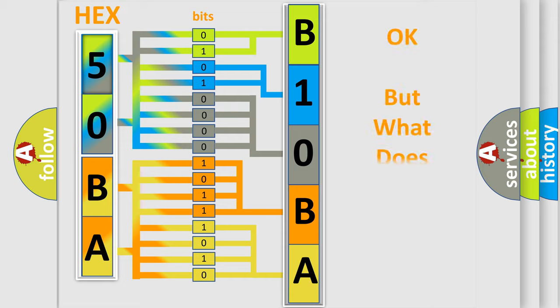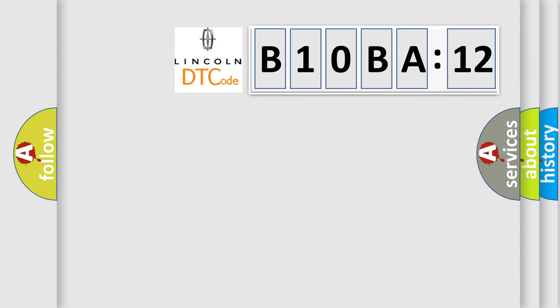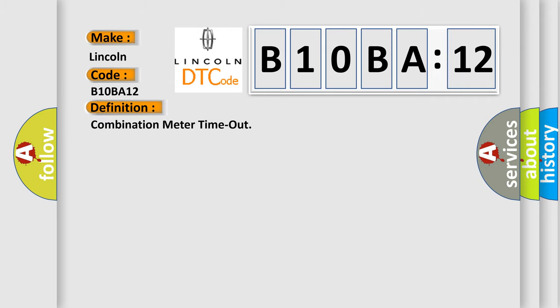We now know in what way the diagnostic tool translates the received information into a more comprehensible format. The number itself does not make sense to us if we cannot assign information about what it actually expresses. So, what does the diagnostic trouble code B10BA12 interpret specifically for Lincoln car manufacturers? The basic definition is Combination meter timeout.